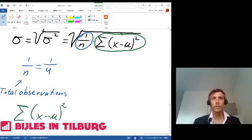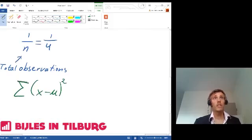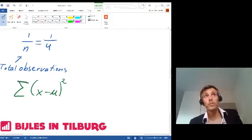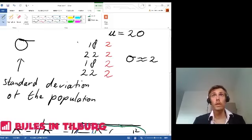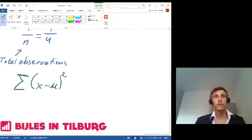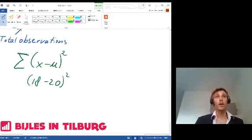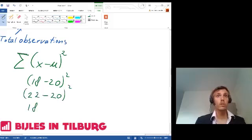It means first take for x the first number, which is 18: (18 minus 20) squared. Now take the second number, which is 22: (22 minus 20) squared. Take the third number, and lastly take the fourth number.